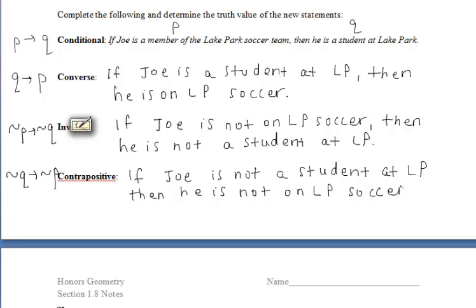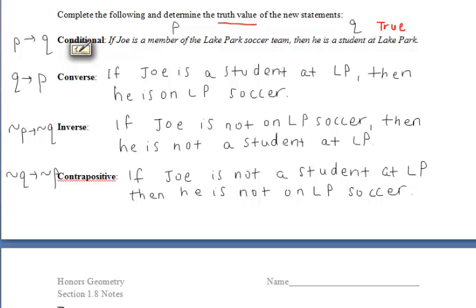We also want to determine the truth value of those statements. The conditional — 'If Joe is a member of the Lake Park soccer team, then he is a student at Lake Park' — is true. The converse — 'If Joe is a student at Lake Park, then he's on the soccer team' — is false, since many students at Lake Park are not on the soccer team. The inverse is also false. The contrapositive — 'If Joe is not a student at Lake Park, then he's not on the soccer team' — is true.